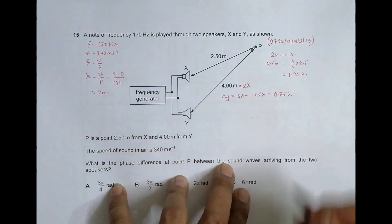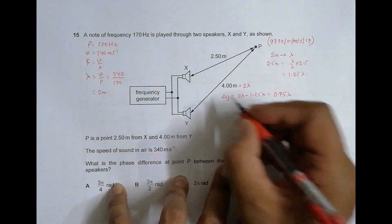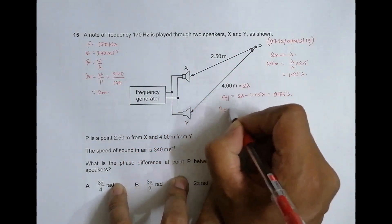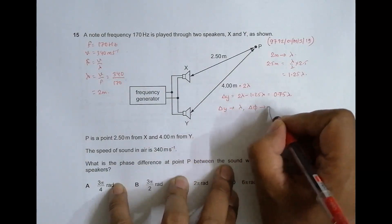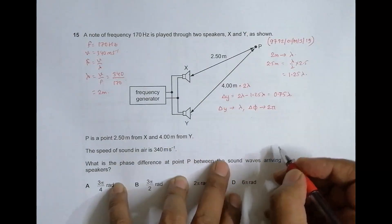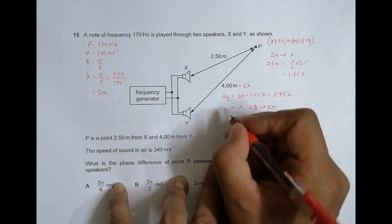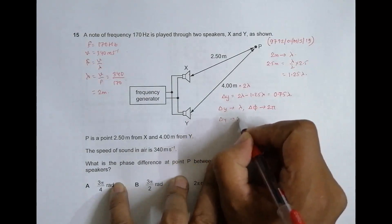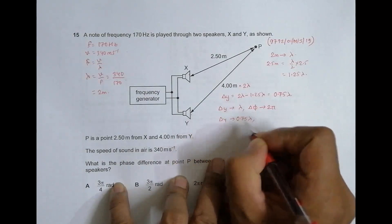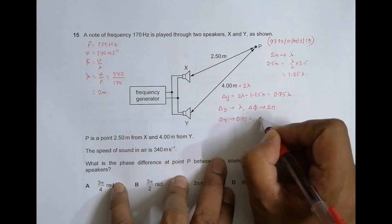Now if the path difference is equal to lambda, the phase difference delta phi is equal to 2 pi radians. That means if delta y equals 0.75 lambda, delta phi or the phase difference should be equal to...